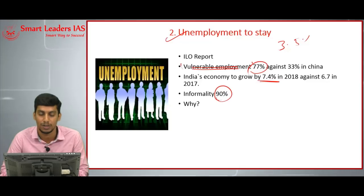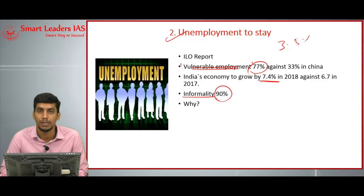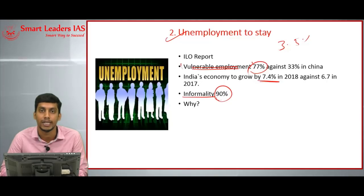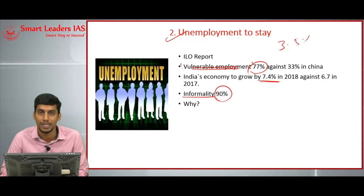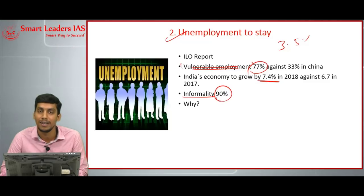Informality is the one thing that affects India's employment — by 90%, not only the agriculture sector but other sectors as well come under informality. There are labor market rigidities because of which manufacturers are not coming forward to create employment. The government has to come forward to ensure that all people are working in proper working conditions with enough social security and proper employment.